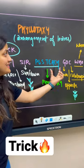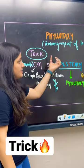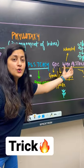The trick here is: CM Sir, please teach GOC who Alstoni. I'm repeating it again - CM Sir, please teach GOC who Alstoni.